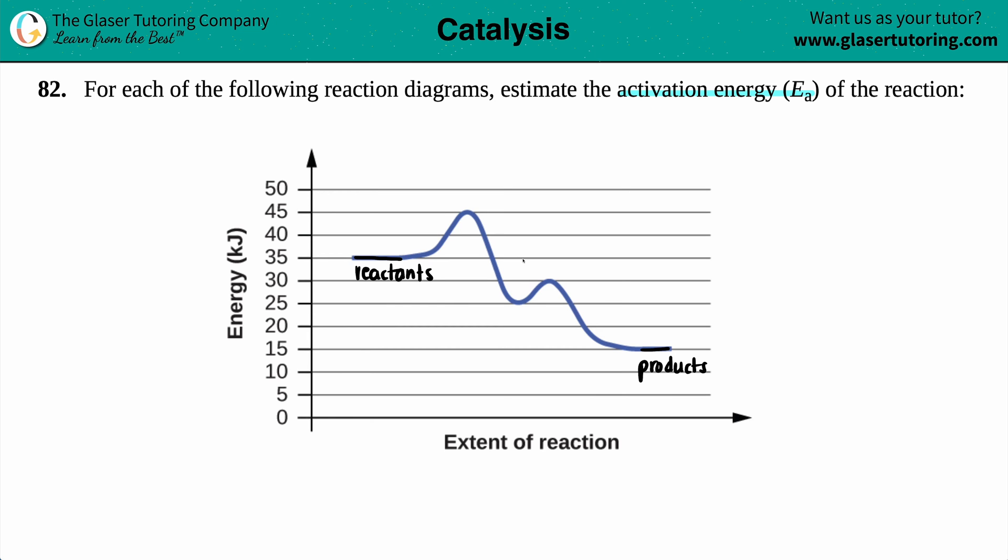Now, the activation energy is this right here. The activation energy is always the peak minus your starting point, because the activation energy should be where you're reaching the highest peak. Now, the highest peak here is this right here. Now, just know that a peak is called a transition state. So it essentially is your transition state energy minus the energy of your reactants.